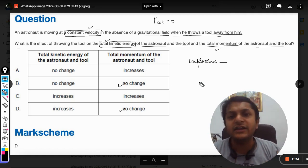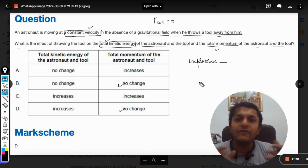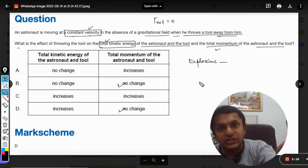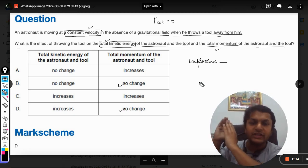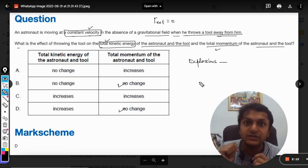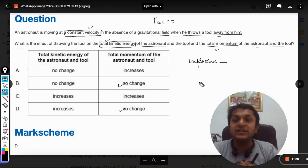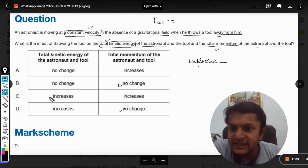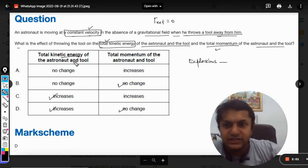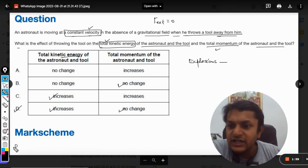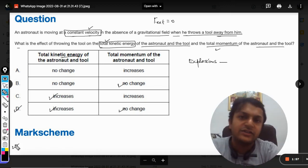So earlier, the kinetic energy was zero. But after the explosion or after the person, when the person throws the hammer, the hammer is moving in the forward direction. The astronaut is moving in the backward direction because momentum is constant. In such case, the kinetic energy will be increased. So I can say that either C or D because the total kinetic energy is increasing and hence D will be the correct answer.